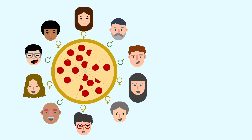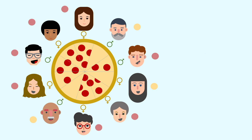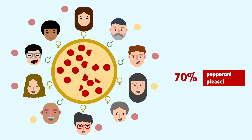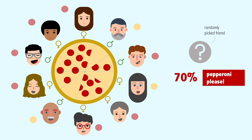Some of Elle's friends like pepperoni on their pizza and others don't. Overall, there are seven people who like pepperoni and three people who do not. In other words, seven out of ten people, or 70% of the friends, like pepperoni. Which means that if we randomly pick one of the friends and ask them if they like pepperoni, there is a 70% probability that this person says yes and a 30% probability that this person says no.